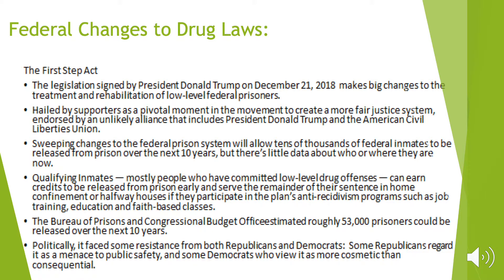This brings us to the First Step Act, legislation signed by President Donald Trump on December 21, 2018, which made big changes to treatment and rehabilitation of low-level federal prisoners. It was hailed as a pivotal moment and an unlikely alliance between President Trump and the ACLU. It is supposed to bring sweeping changes to the federal prison system and could allow tens of thousands of inmates to be released over the next 10 years — mostly people who committed low-level drug offenses. Those people can earn credits to be released early and serve the remainder of their sentence in a home or halfway house, as long as they participate in programs such as training, education, or faith-based programs. The Bureau of Prisons and Congressional Budget Office estimates roughly 53,000 prisoners could be released over the next 10 years. Politically, Republicans regarded it as a menace to public safety, while some Democrats think it's more cosmetic than consequential.